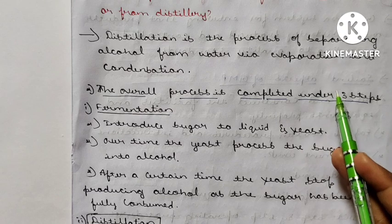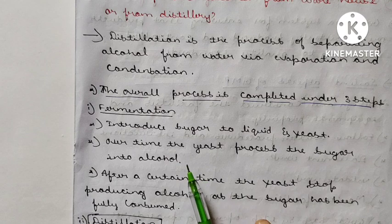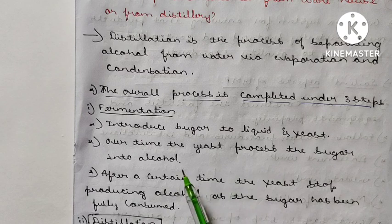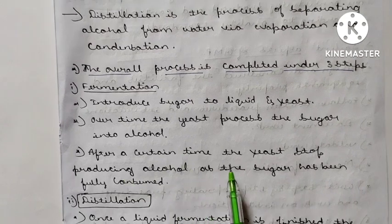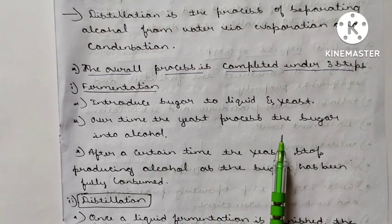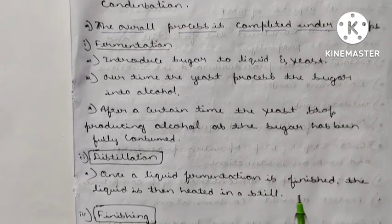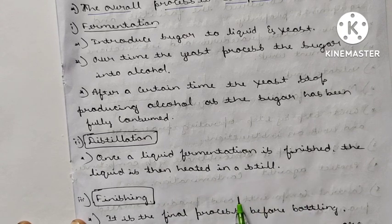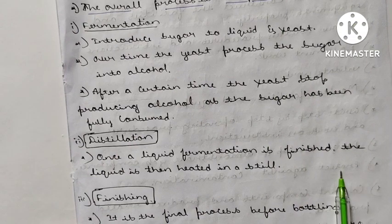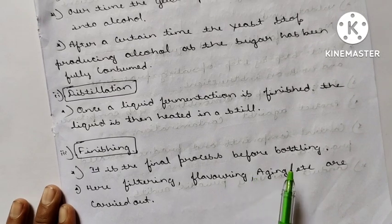Once liquid fermentation is finished, the liquid is heated in a still — a large, heavy, bulky cylinder. Distillation separates the alcohol. Finishing is the final process before bottling and includes filtering, flavoring, and aging. All these steps are carried out in finishing.